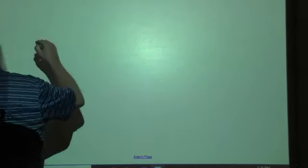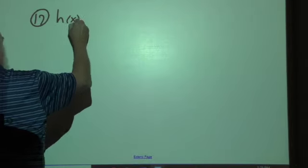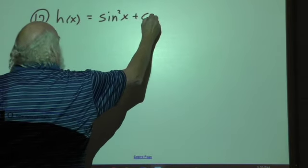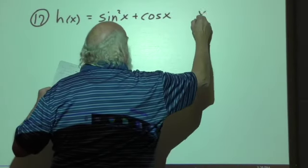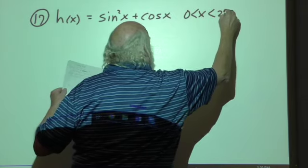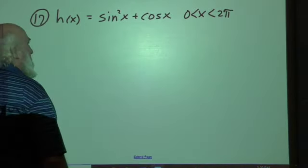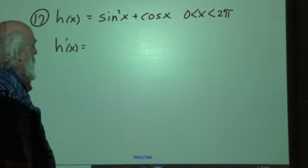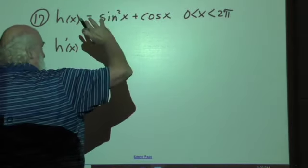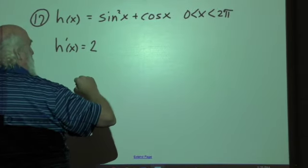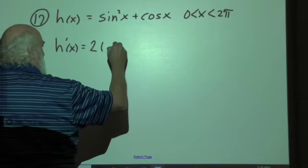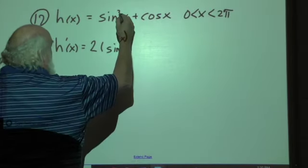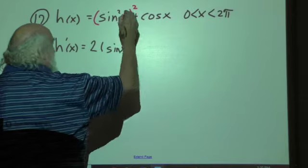Last problem we'll do at number 17 is h of x equals sine squared x plus cosine x. And for this they want x to be somewhere between 0 and 2 pi or 360 degrees. Okay? Well this is a pretty easy one to derive. So h prime of x. We start with this. We have this sine x squared. So the 2 goes in front. And that's where we have sine x left over because we subtract 1 from the 2.